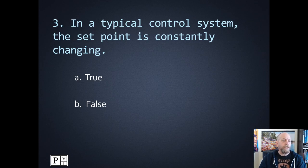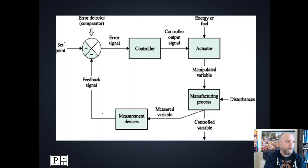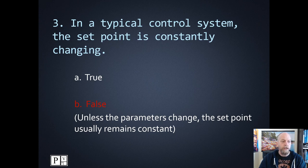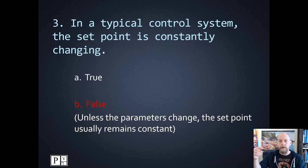Number three: in a typical control system, the set point is constantly changing. Think of this like a thermostat — are you going to the thermostat every half hour and changing the temperature? No, you're basically keeping it the same. The set point is coming into this block diagram right here. Unless the parameters change, the set point usually remains constant. The only time it would constantly change would be in a robot where your set point is always changing. In process control — level, temperature, pressure — the set point is usually staying constant.